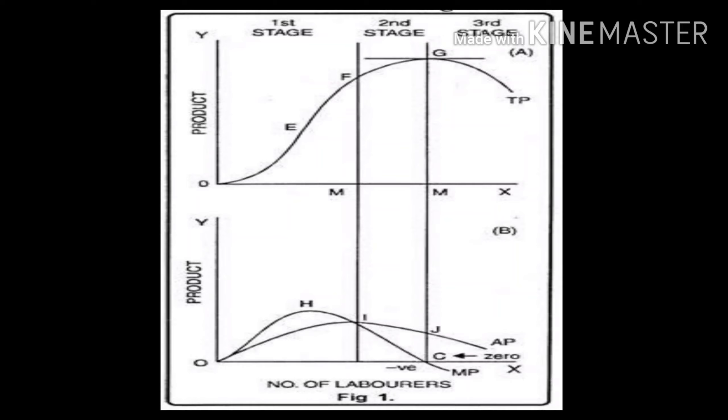So these are the three phases. Phase one is known as increasing return to a factor, defined from O to E. Phase two runs from E to F — diminishing return to a factor.